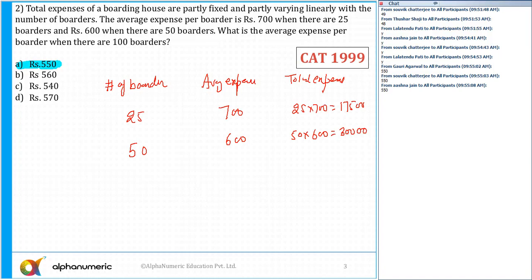What is the average expense when there are 100 boarders? So when there are 100 boarders, what is the average expense I need to find out? Now if you look at here, the number of boarders here increased by 25. We know that some of the part are fixed and some of the part are varying.